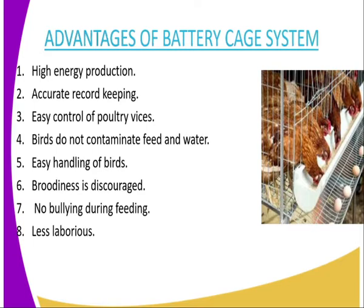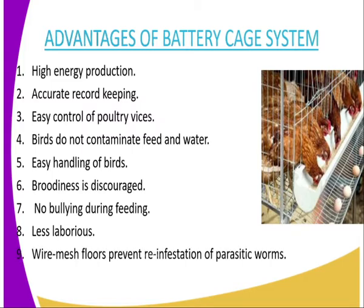Number seven, no bullying during feeding because the birds are feeding from their respective positions. Number eight, less labor is required because you can mechanize even the feeding process and even the egg collection. Wire mesh floor prevents reinfestation of parasites because once the poultry defecate, the droppings will fall down and therefore will not accumulate within the cages.